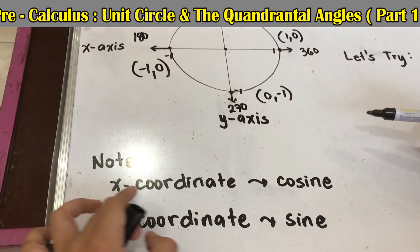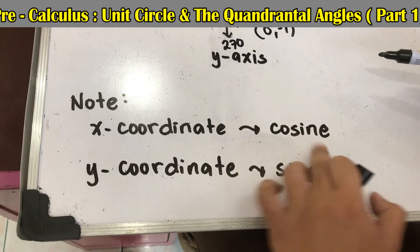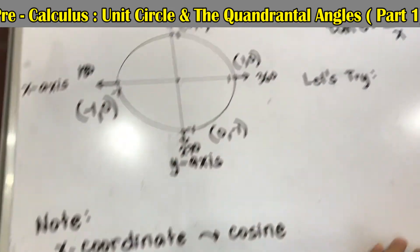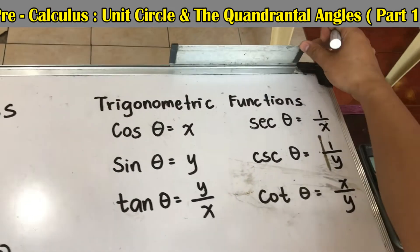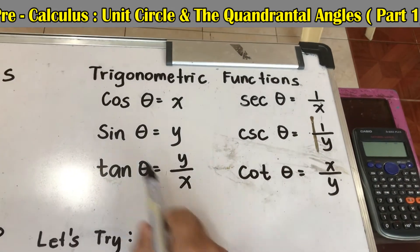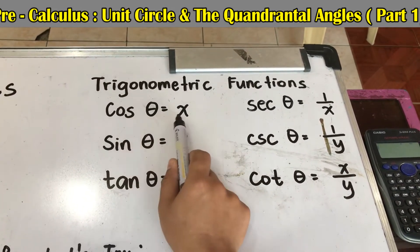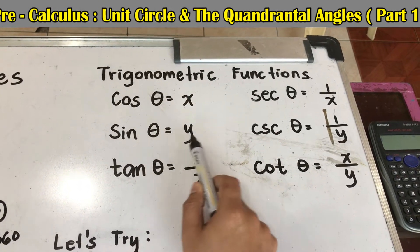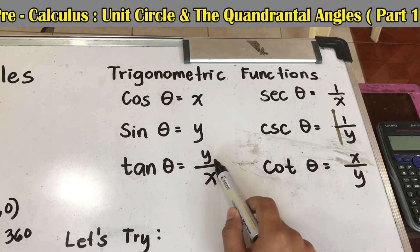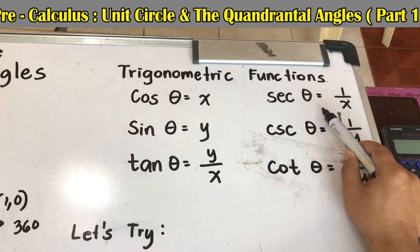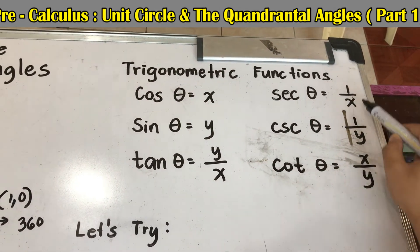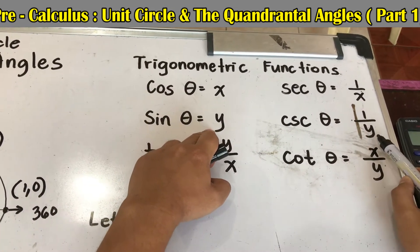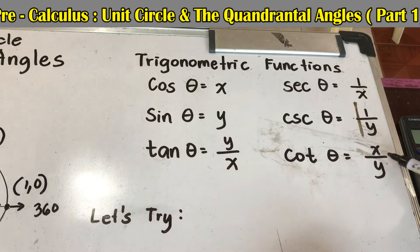Take note, in our unit circle the x coordinate indicates our cosine and y coordinate indicates our sine. Now let me introduce to you the trigonometric functions. We have six trigonometric functions. First, cosine θ equals x, sine θ equals y, tangent θ equals y over x, secant θ, the reciprocal of cosine, which is 1 over x, cosecant θ, reciprocal of sine, which is 1 over y, and cotangent, the reciprocal of tangent, x over y.